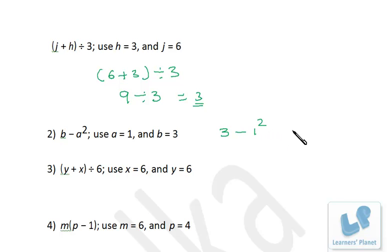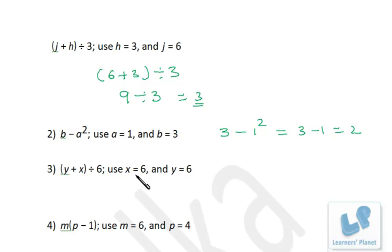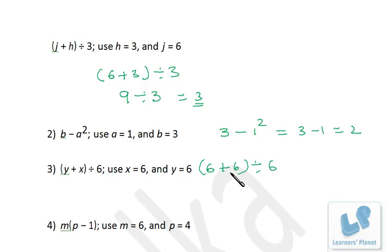For (y plus x) divided by 6 with x equals 6 and y equals 6: solve the bracket first, 6 plus 6 is 12, divided by 6 is 2. For the next problem with m equals 6 and p equals 4, put in the values: (p minus 1) gives 4 minus 1 equals 3, then m into 3 is 6 into 3, that is 18.